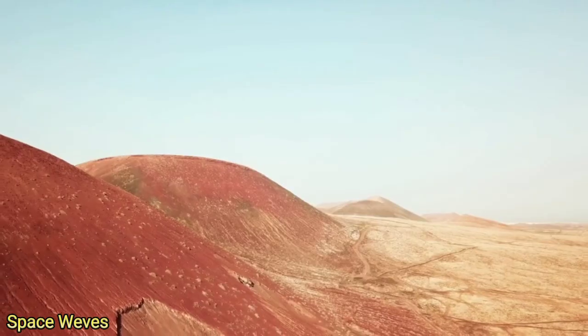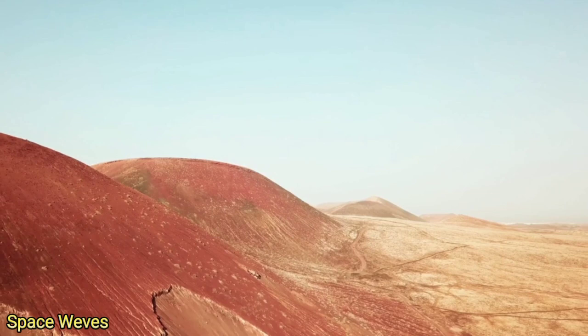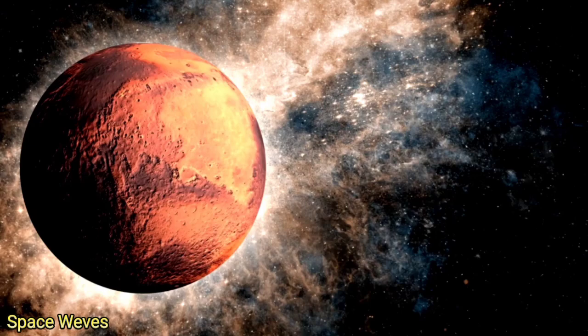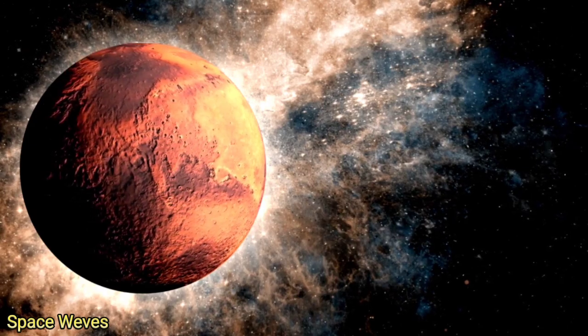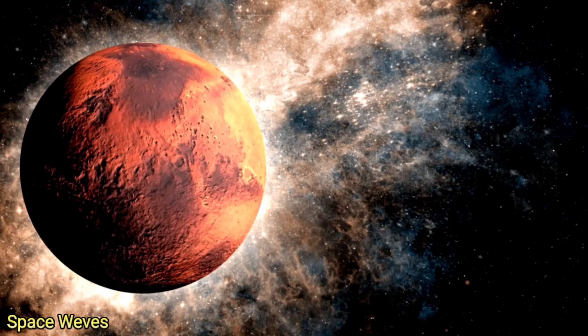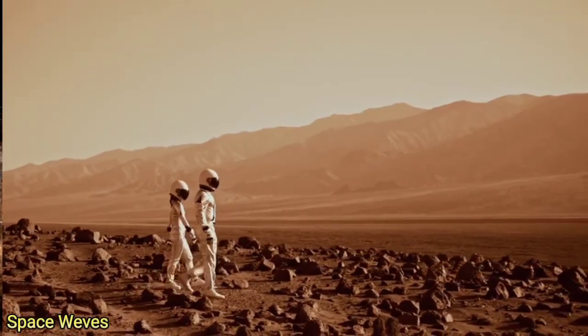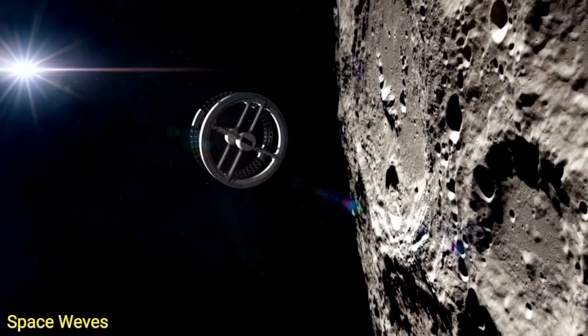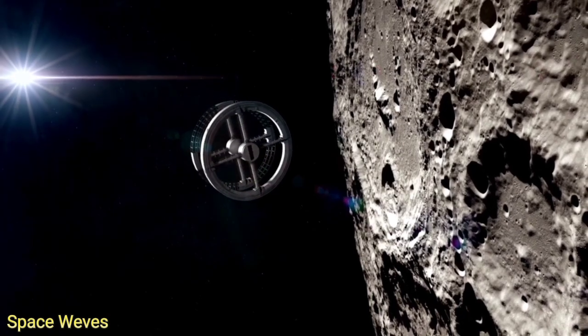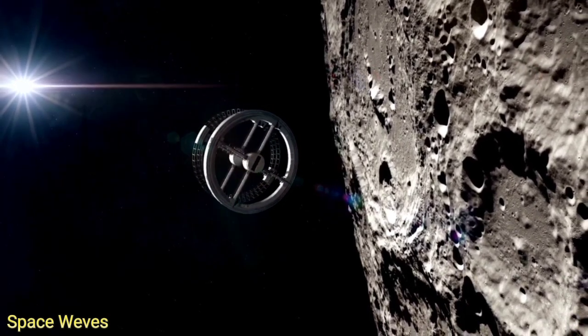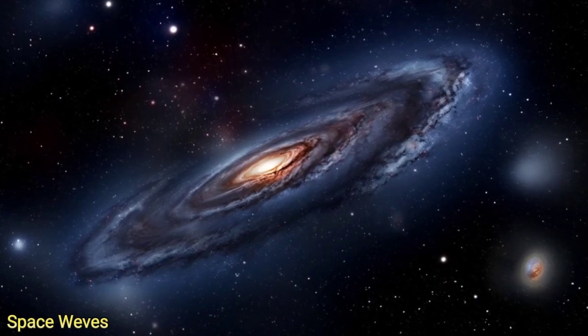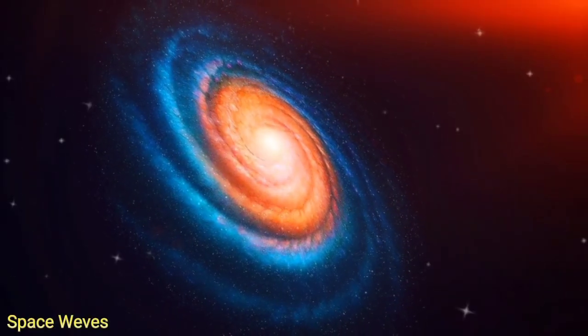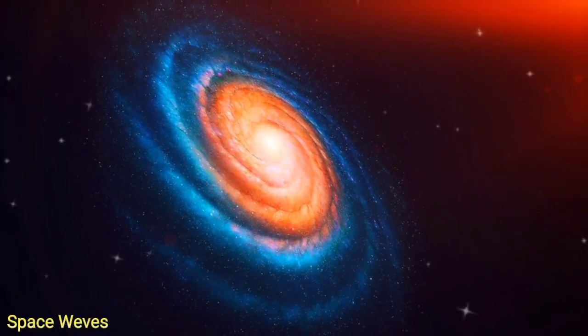Because of its immense size, Betelgeuse has burned through enormous amounts of fuel throughout its lifetime. As it nears the end of its life, its core is rapidly collapsing under the force of gravity. This collapse is what will ultimately trigger the violent explosion of a supernova. The process leading up to the explosion of Betelgeuse is complex. As it approaches supernova status, the star's core begins to contract and heat up while its outer layers expand and cool.